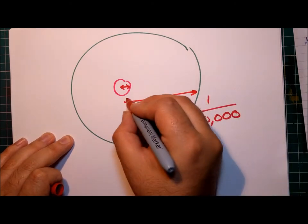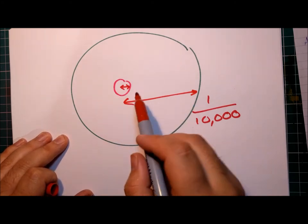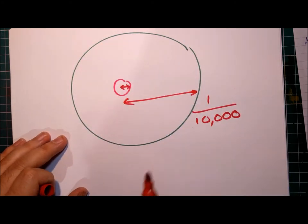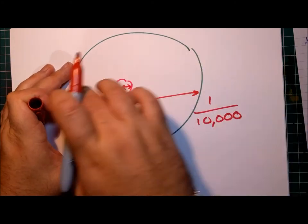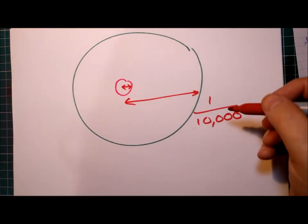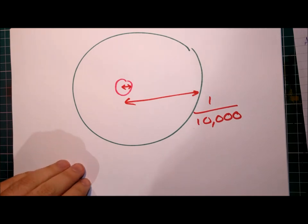So one ten-thousandth the radius of the whole atom. Now, in the picture I've drawn here, this radius is maybe a tenth the radius of this whole atom that I've drawn. If I had drawn it to scale, and the electron shell was out here, this was the radius of the atom, you wouldn't be able to see the nucleus, because it's one ten-thousandth the size.